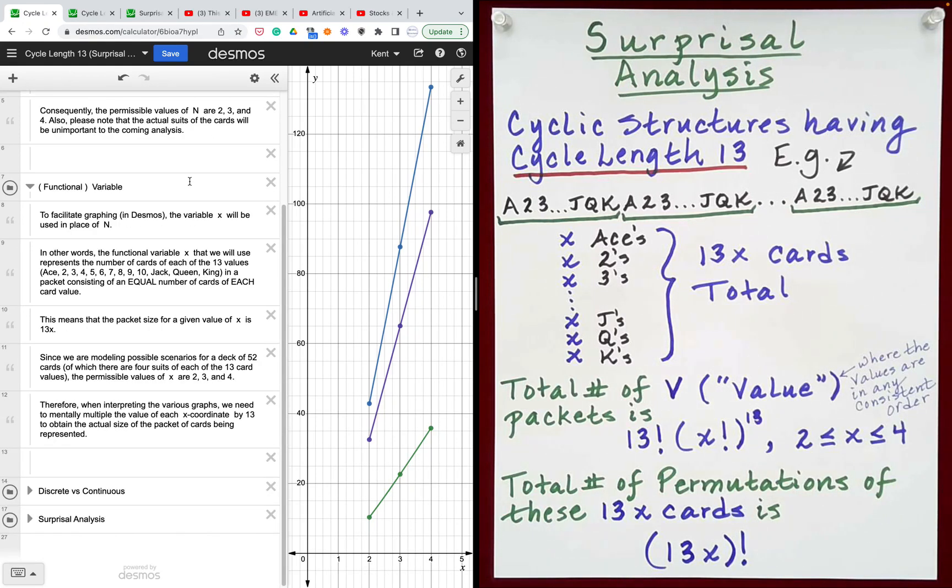To facilitate graphing in Desmos, the variable x will be used in place of n. In other words, the functional variable x represents the number of cards of each of the 13 card values, ace through king, in a packet consisting of an equal number of cards of each card value.